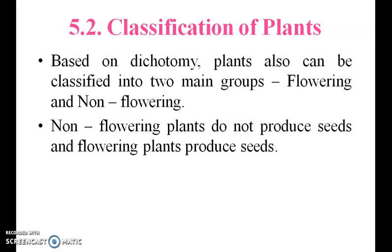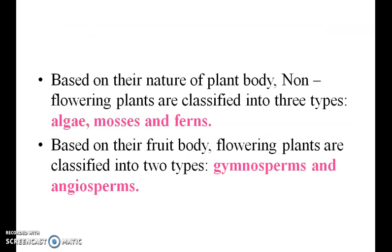Classification of plants. Based on dichotomy, plants can also be divided into two main groups: flowering and non-flowering. Based on the nature of the plant body, non-flowering plants are classified into three types.